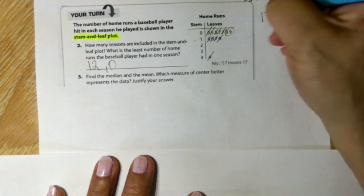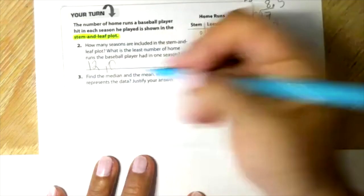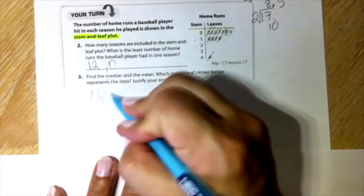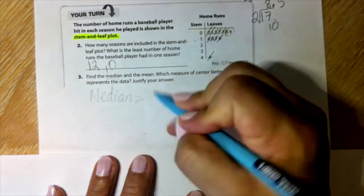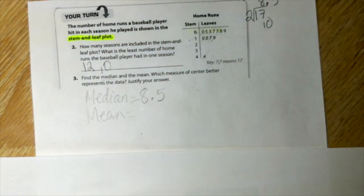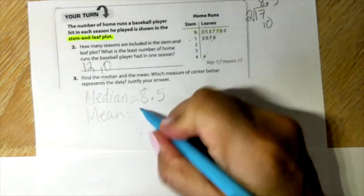You mean you have to add all the numbers? 44 divided by 12, 11.75.